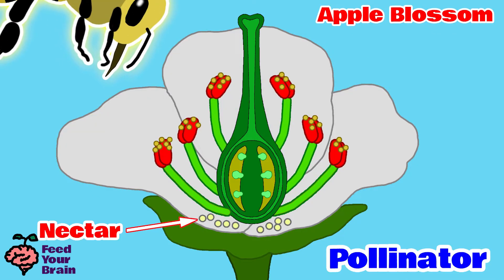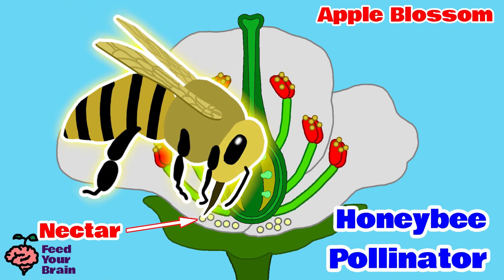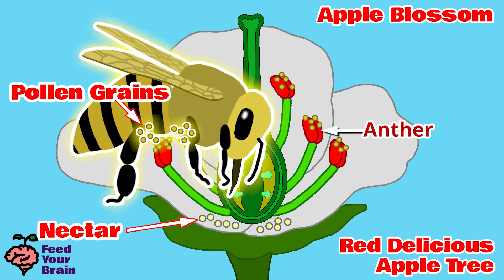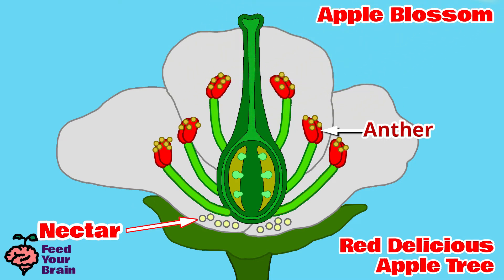Insects that feed on nectar are called pollinators, such as honeybees. Honeybees are attracted to the scent and colors of flowers, fly down and land on the flower, and reach into the bottom and drink up the nectar. As the honeybee feeds, its body brushes against the anthers, which are covered in pollen grains. The pollen grains get stuck all over the honeybee, because it is covered in tiny hairs. Then after feeding, the honeybee flies away to feed on another flower.